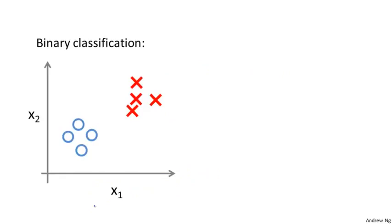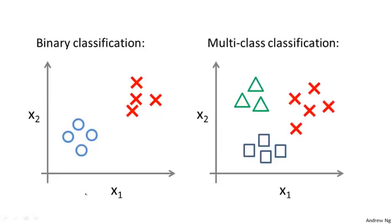Whereas previously, for a binary classification problem, our data sets look like this. For a multi-class classification problem, our data sets may look like this, where here I'm using three different symbols to represent our three classes. So the question is, given the data set with three classes, where this is an example of one class, that's an example of a different class, and that's an example of yet a third class, how do we get a learning algorithm to work for the setting?